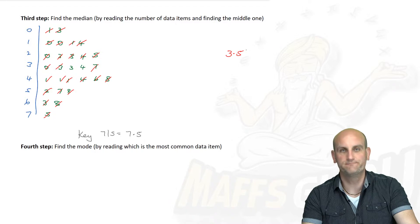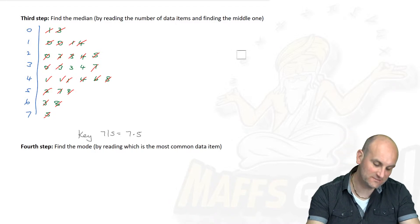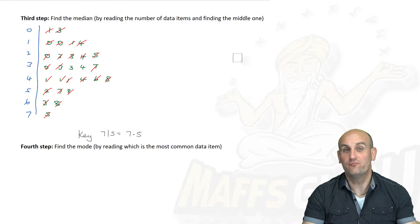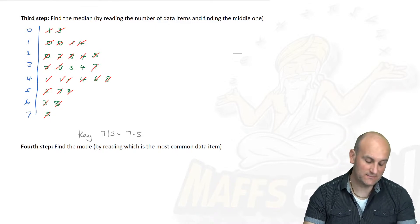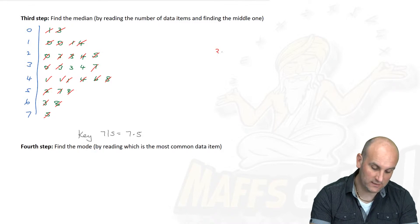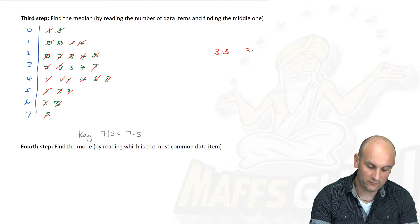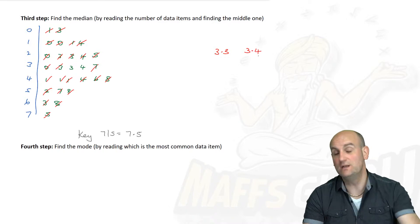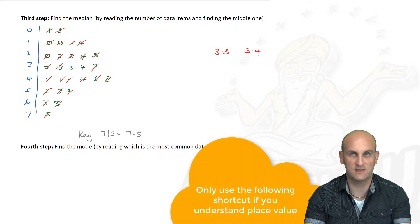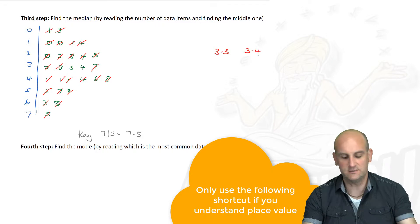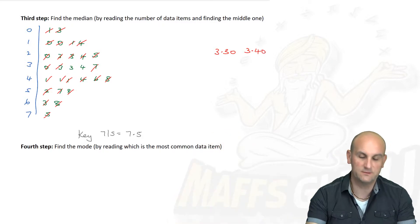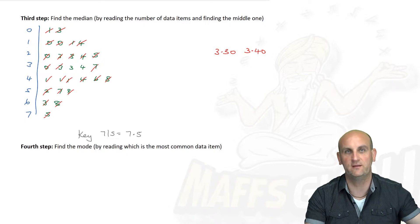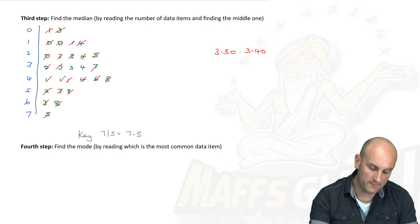No. Because sadly, I've just made a really common mistake. I haven't read my stem and leaf diagram properly because actually that number there is 3.3 and 3.4. What's halfway between those two? There's lots of ways of doing this. I can add the two numbers together and divide by 2. I tend to add a zero on the end of both numbers.